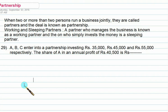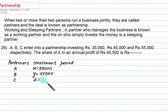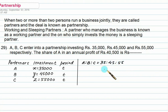Here A, B, C are three partners entering into a partnership investing 35,000, 45,000, and 55,000. We have three columns: partner, investment, and period in months. Investment of A is 35,000, B is 45,000, and C is 55,000. Since the period is not given, we assume they all invested for the same period T. Their ratio of investment is A:B:C = 35,000:45,000:55,000, which simplifies to 7:9:11.